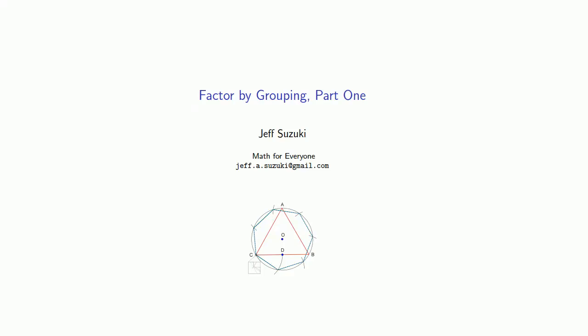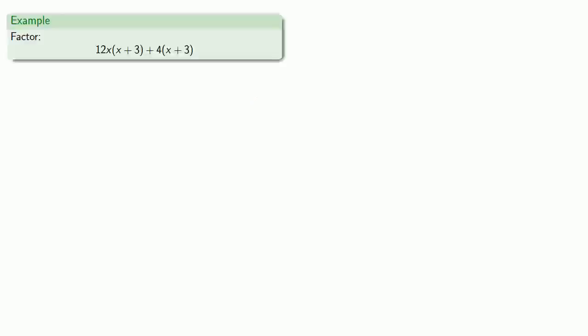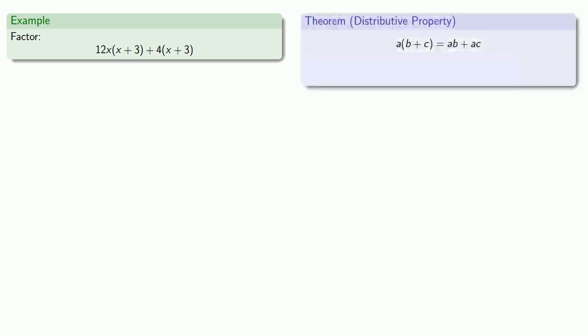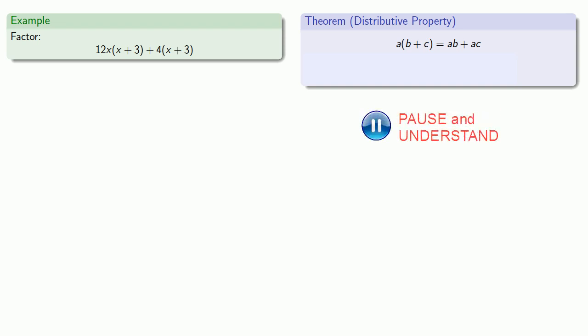One of the ways we have factoring is known as factor by grouping. We'll take a look at this approach. The thing to recognize is that all factoring is based on the distributive property, and what that means is we want to find a common factor. Remember, definitions are the whole of mathematics — all else is commentary. We want to find a common factor.